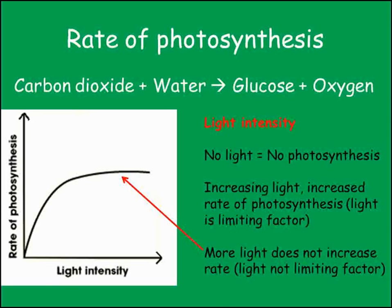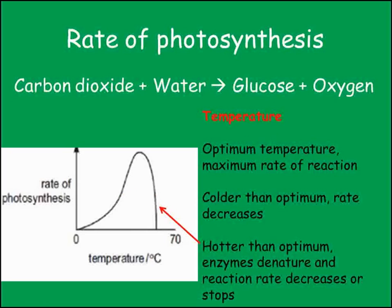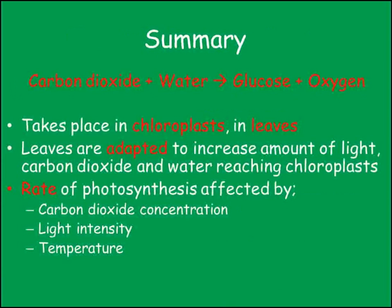As with all other chemical reactions taking place in living cells, photosynthesis is controlled by enzymes. These are proteins that act as biological catalysts, speeding up the reaction. As with all enzyme reactions, there is an optimum temperature for the reaction to take place at. Colder than this and the reaction slows down. If it is hotter than the optimum, the heat energy denatures the enzyme so that its shape is altered and it no longer works. This is why the graph falls rapidly at temperatures above the optimum.